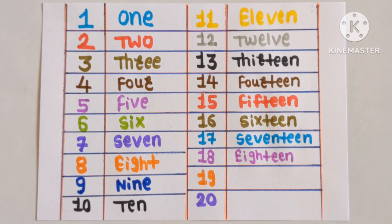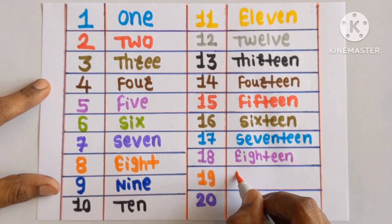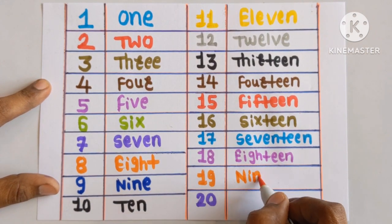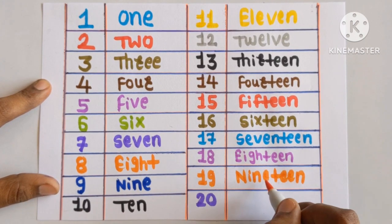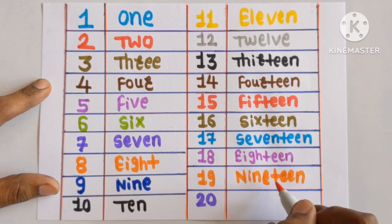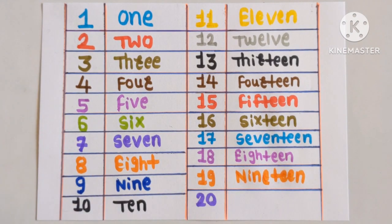Purple color. Next number is number 19: N-I-N-E-T-E-E-N. Nineteen. Orange color.